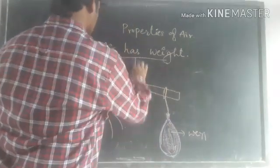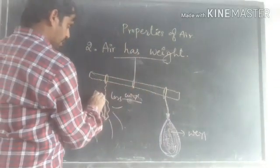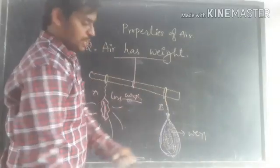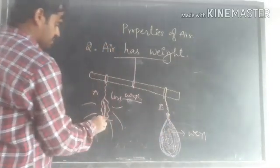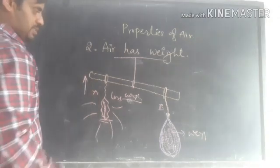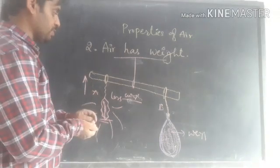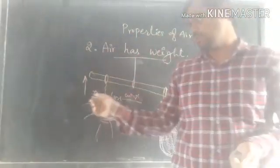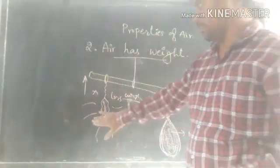So that balloon B comes downward because it has the weight. Because of less weight, air moves up. Air moves up. Very simple experiment that reveals that air has the weight. You could do this with balls also, air balls, right?